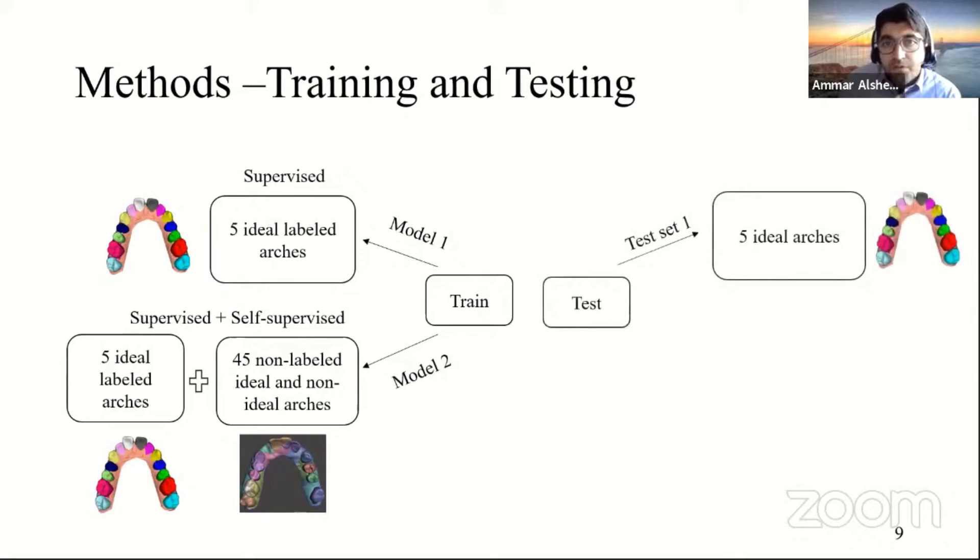And then we will perform testing in two different datasets: one test dataset that has five ideal arches and one test dataset that has six non-ideal arches.